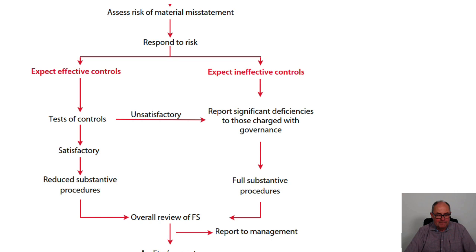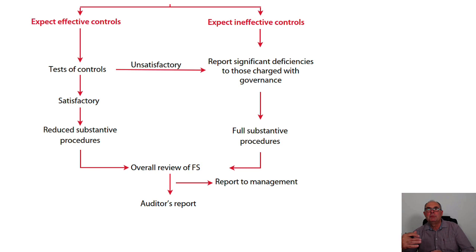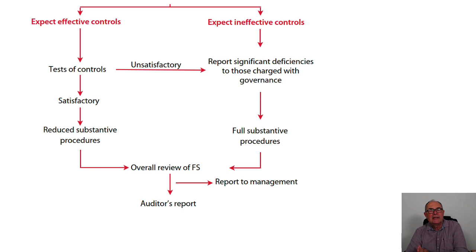The traditional response is that if the controls are going to be effective, you go down the left-hand side of the diagram, make sure the controls are working, and then you won't have to do as much detailed work on the numbers. Otherwise, if controls are expected to be ineffective, you might have to do a lot more work yourself. These days, larger audit firms auditing larger clients are sometimes going down the right-hand side by choice, making much more increased use of computers. Because of audit data analytics, it's actually possible to test 100% of the numbers in some cases using the computer, which means perhaps in the future, controls testing will almost become a little bit redundant.